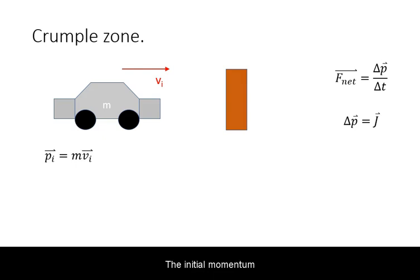The initial momentum will be the product of the mass times the initial velocity. As the driver in the car comes to a halt, the final momentum will be zero. Hence the impulse on the driver will be equal to negative mass times initial velocity.